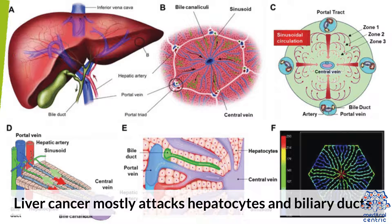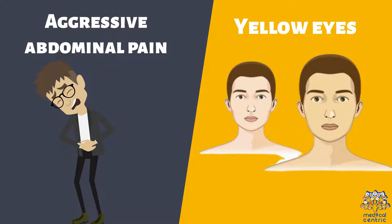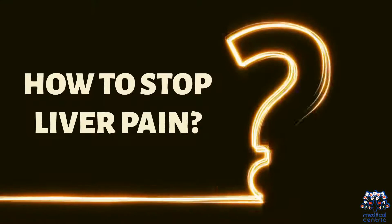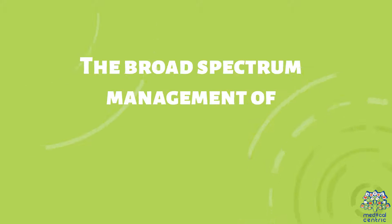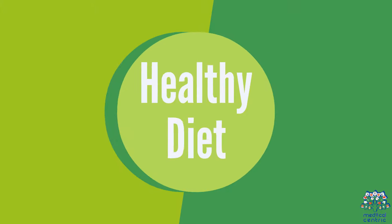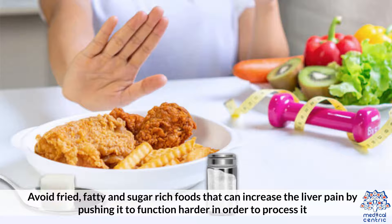Liver cancer mostly attacks hepatocytes and biliary ducts, resulting in aggressive abdominal pain and yellow eyes. To manage liver pain, a healthy diet is recommended — avoid fried, fatty, and sugar-rich food that can increase liver pain by pushing the liver to function harder to process it.